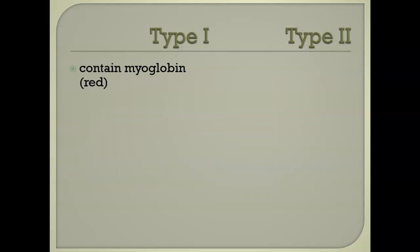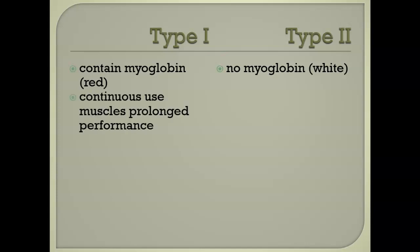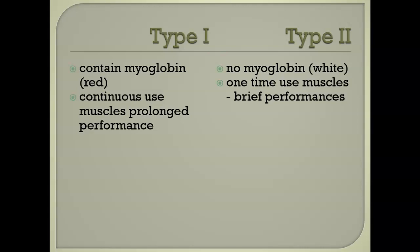Why do they have this color appearance — this light and dark? Because of the protein myoglobin. Myoglobin is similar to hemoglobin in that it holds oxygen. Having myoglobin allows the muscle to hold oxygen, which allows it to make more ATP without going anoxic. The white muscle — type 2 — does not have myoglobin. So type 1 is for continuous use, like a chicken running around the yard. Type 2 is for brief use, like a chicken flying up to its roost. Type 1 is for endurance; type 2 is for power and speed.